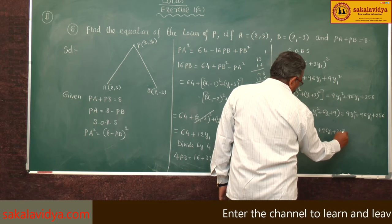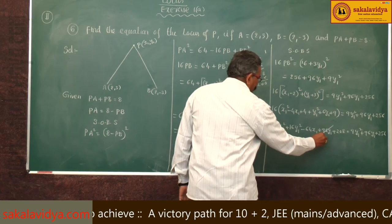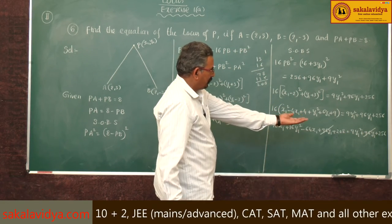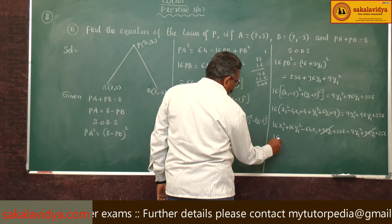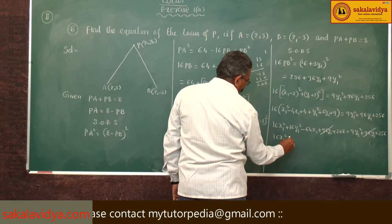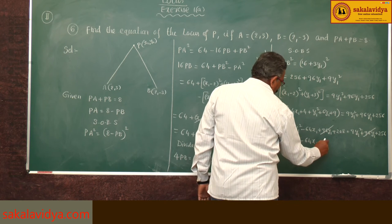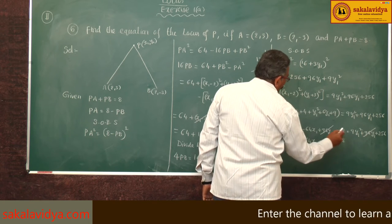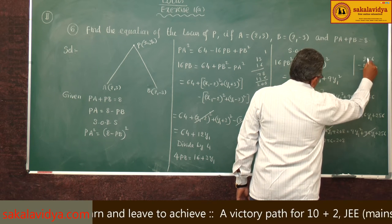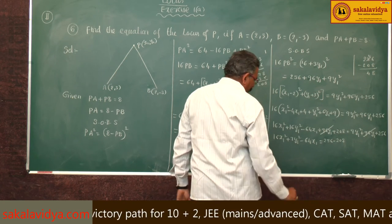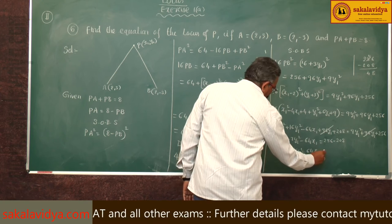Expanding and simplifying: 96·y1 cancels from both sides. Bringing 9·y1² and 256 to one side and 208 to the other: 16·x1² + 7·y1² - 64·x1 equals 256 minus 208, which gives 48. So: 16·x1² + 7·y1² - 64·x1 - 48 = 0.